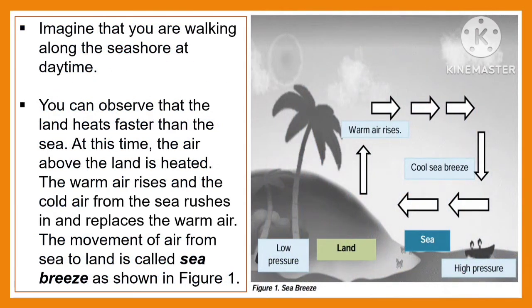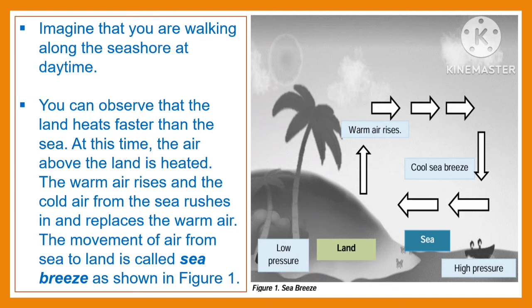Imagine that you are walking along the seashore at daytime. You can observe that the land heats faster than the sea. At this time, the air above the land is heated. The warm air rises and the cold air from the sea rushes in and replaces the warm air. The movement of air from sea to land is what we call the sea breeze.